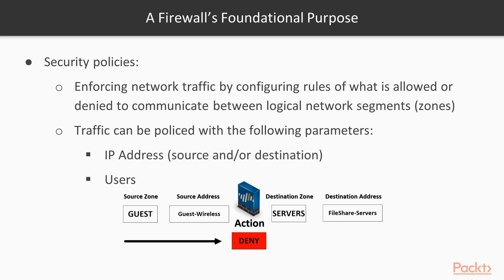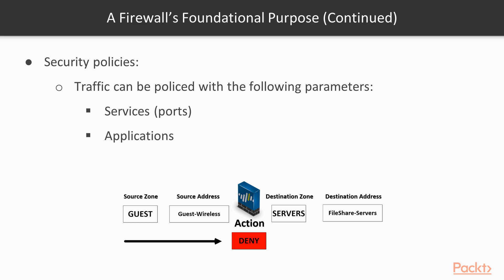For example, why does the accounting subnet need to reach the marketing servers? Or why do we need users on the guest network able to go to every single website? That's why we have specific rules — we can say the guest network is allowed, but I am not allowing you to go to this particular site. This is why we're actually implementing a firewall.